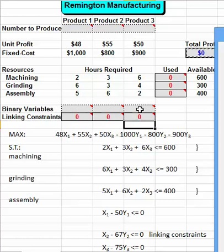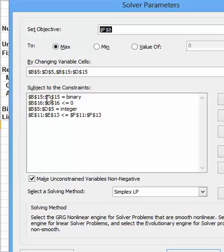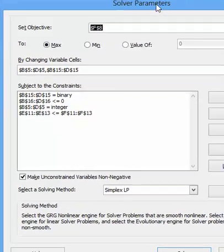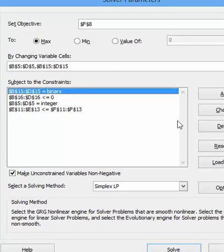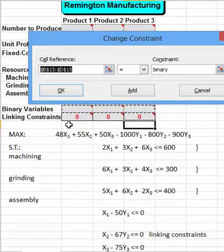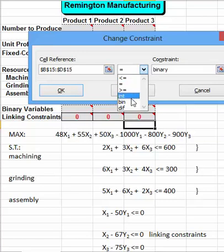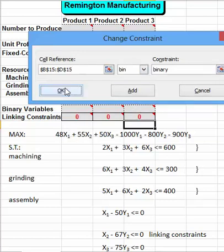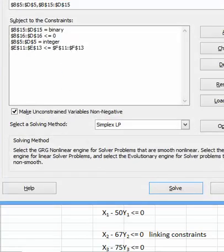There are certain constraints. The first one is that these cells should be binary, so we make B15 to D15 equal to binary. I'll show you how to do that. I'll click on this and change, so we'll say B15 to D15 equals to binary right here, and click OK. That creates our binary constraint.